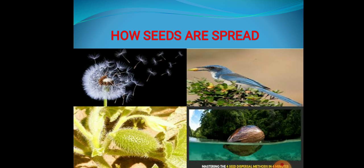That is another method of seed dispersal — the spreading of seeds. Some seeds are carried by animals and birds. Birds eat the fruit and, along with the fruit, the seeds are also carried to different places. After eating the fruit, they drop the seeds. Sometimes the fruit is digested by the animal but the seeds pass through the digestive tract and are dropped in other locations where they germinate and grow into new plants when they get a suitable environment.